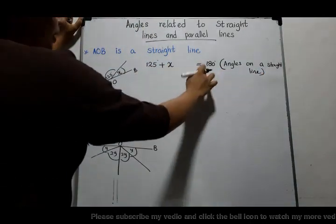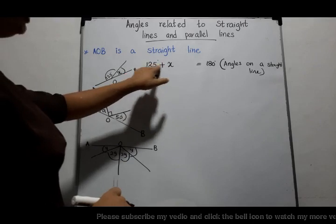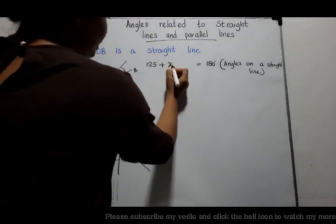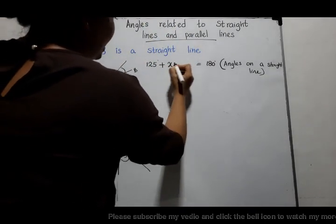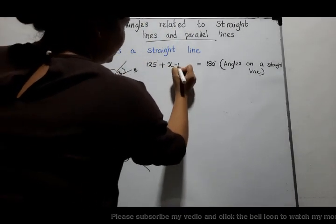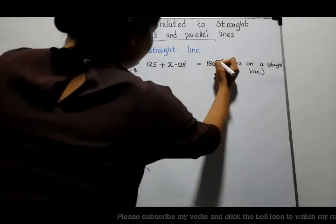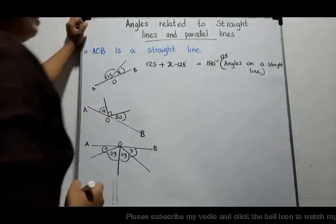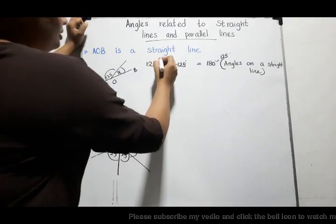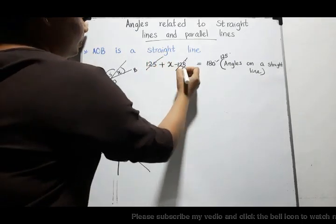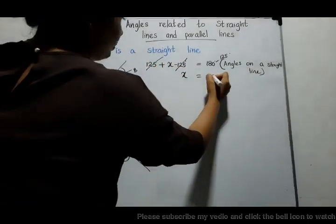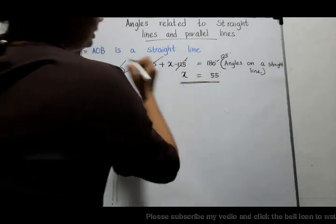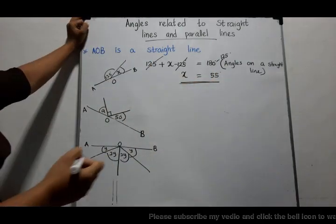We can build up an equation: 125 degrees plus X equals 180 degrees. The reason is: angles on a straight line. To find X, we remove 125 degrees from both sides. The magnitude of X is 55 degrees.